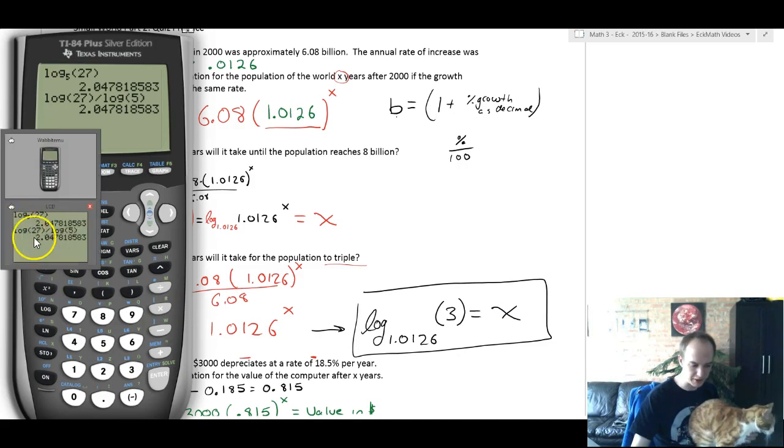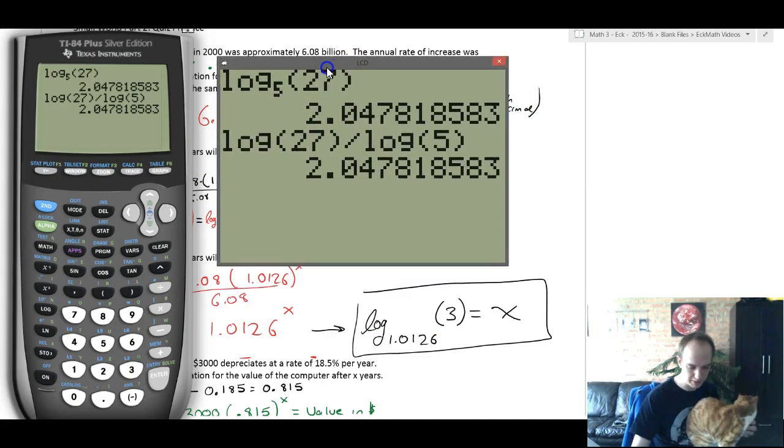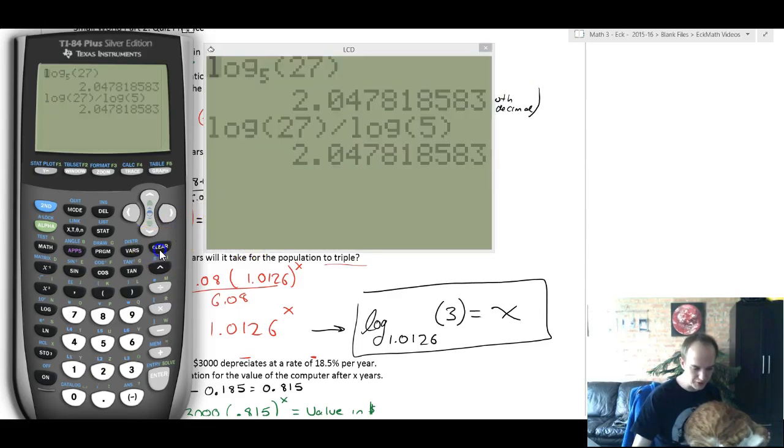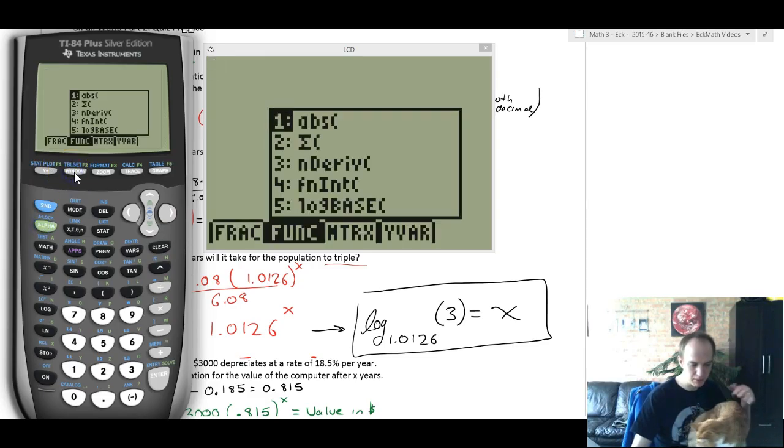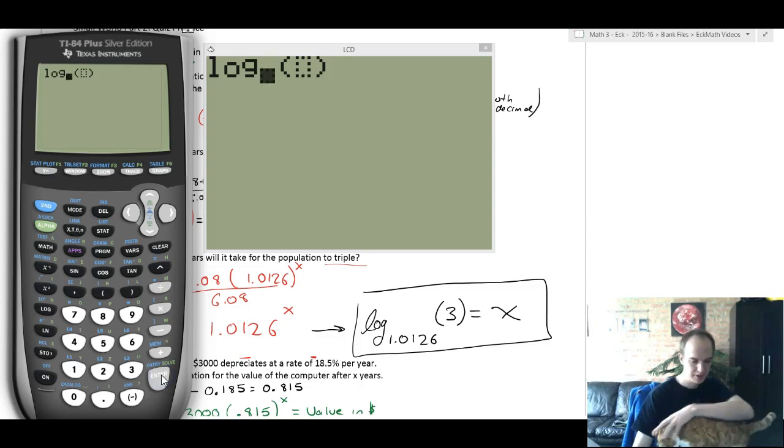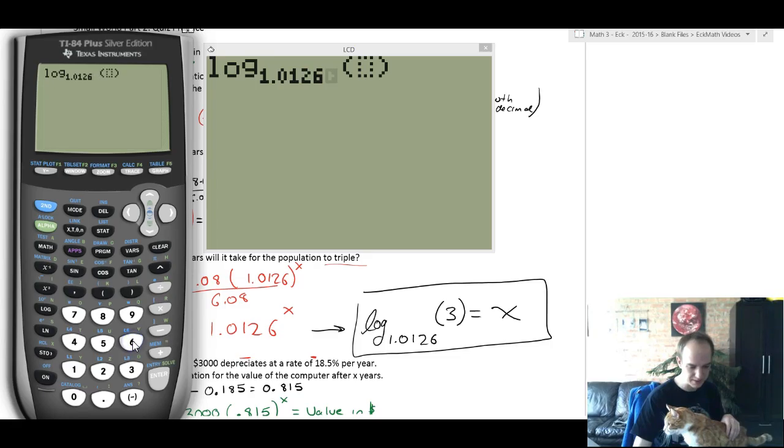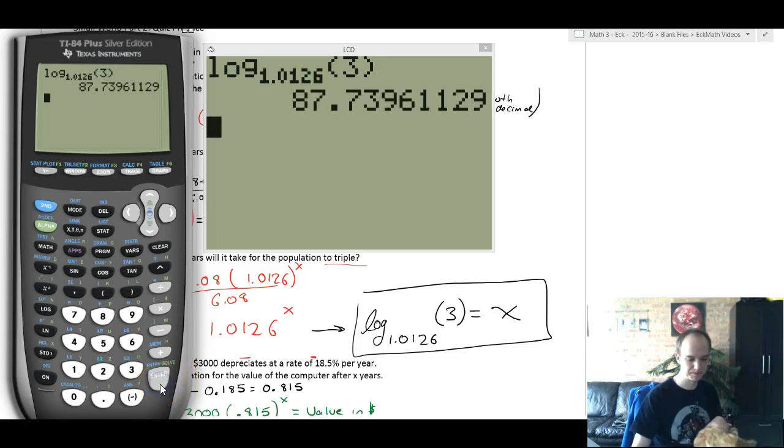Let's figure out how many years that is. So again, go up to our calculator, we'll get our screen out and clear out the old stuff. And if you have the TI-84 silver, you're going to hit alpha window and scroll over to log base. Now you're just going to type in 1.0126 and then scroll over and type three. Now let's see how many years it would take to solve this problem. It says 87.73 years for the world population to triple at the growth rate that they were saying.